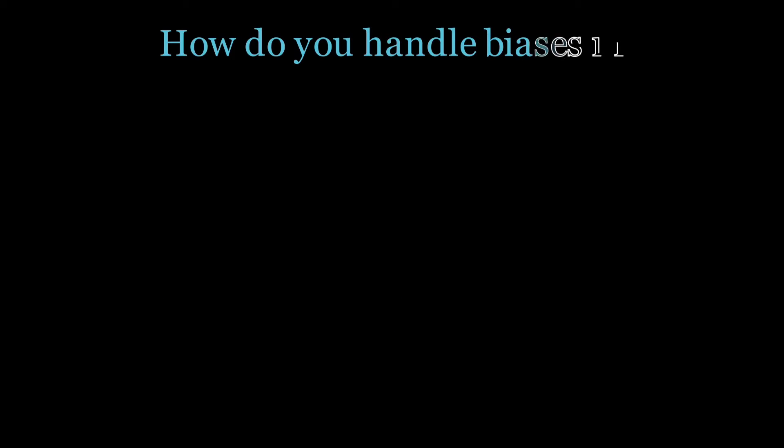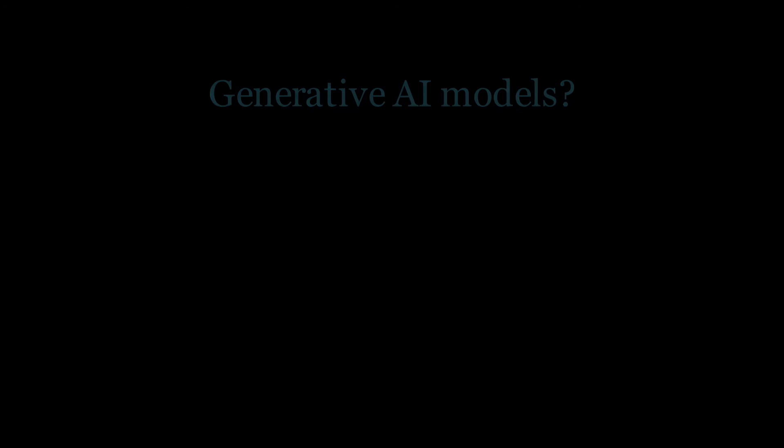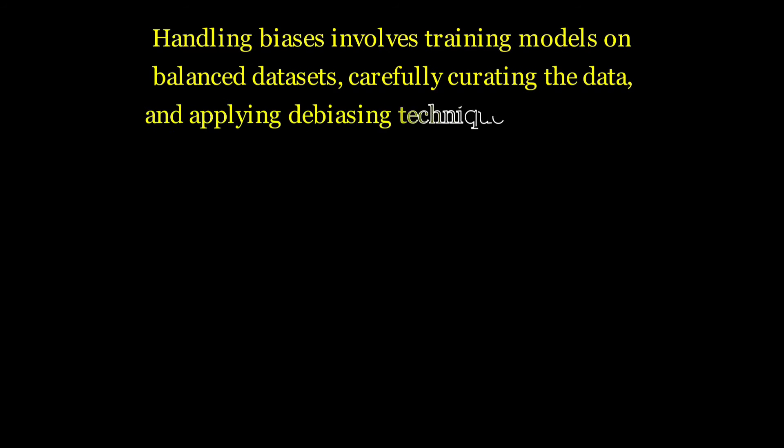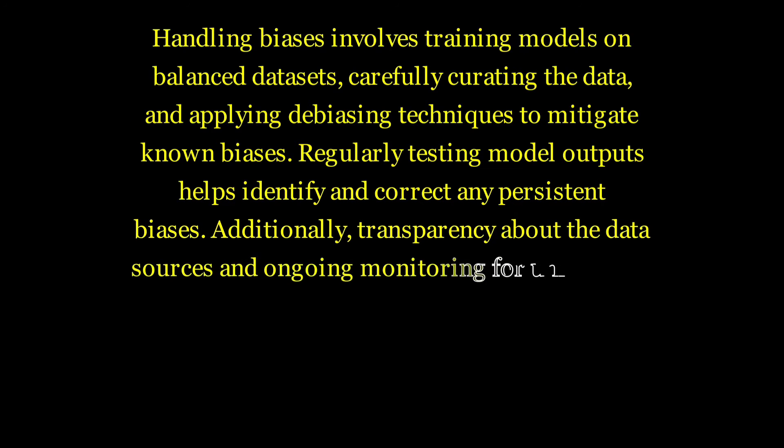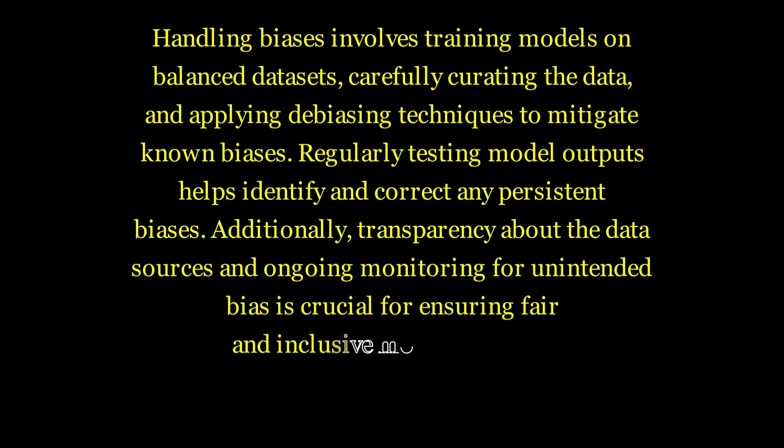How do you handle biases in generative AI models? Handling biases involves training models on balanced datasets, carefully curating the data and applying debiasing techniques to mitigate known biases. Regularly testing model outputs helps identify and correct any persistent biases. Additionally, transparency about the data sources and ongoing monitoring for unintended bias is crucial for ensuring fair and inclusive model behavior.